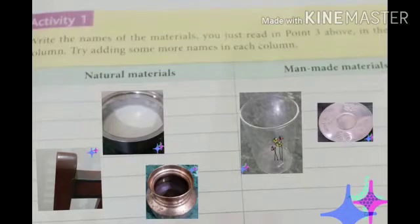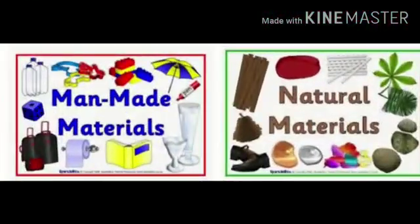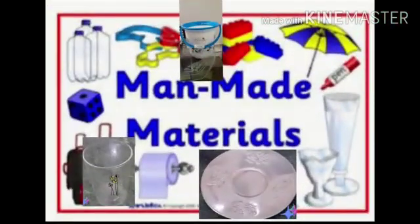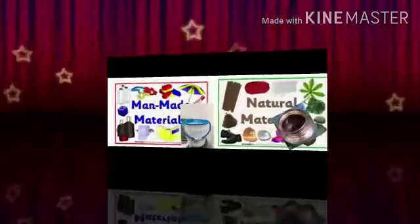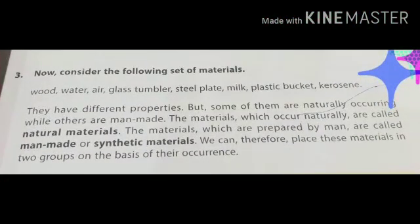Here I pasted the picture for you. Simply you can write the name of the above given objects into the particular category. For example, wood, water, air, milk, and kerosene will come in the natural material, and the remaining will come in the man-made material. So now is it clear that on the basis of occurrence, materials can be divided into two categories: man-made materials, also known as synthetic material, and natural material.